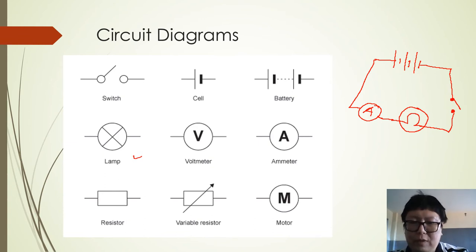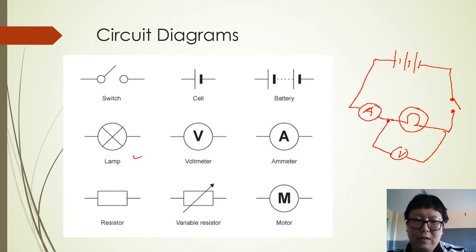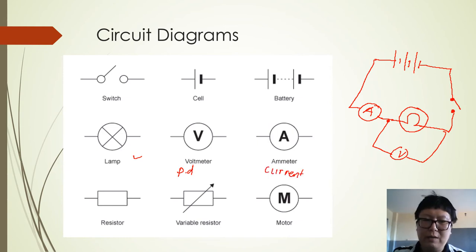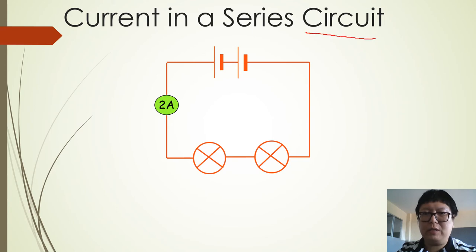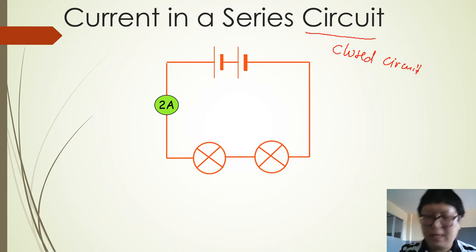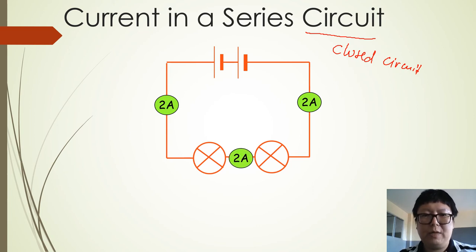If you want to add a voltmeter across the lamp, place it in that position — I will explain why in my next video. The voltmeter measures potential difference, and the ammeter measures current. Remember that a circuit must be a closed circuit. Make sure your circuit is closed. In a closed circuit with no branches, the current will be the same throughout.